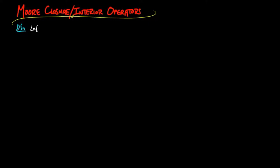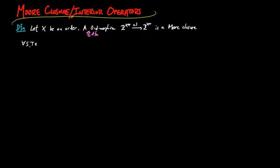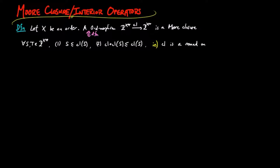More closure and interior operators. We begin with the definition. Let x be an order. An order endomorphism, denoted by Cl, of the order of downsets of x is a Moore closure provided: for each pair of downward closed subsets s and t of x, one, s is less than or equal to the closure of s, and two, the closure composed with the closure of s is less than or equal to the closure of s. In other words, the closure operator is a monad on the downward closed subsets of x.